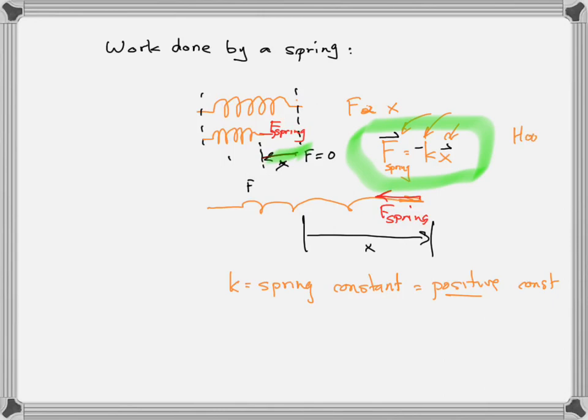Hooke's law, as in Robert Hooke — the person who fought with Newton. Newton was said to have remarked, 'If I've seen farther, it's because I've stood on the shoulders of giants,' because Hooke was a small man. And Newton was talking about Galileo. Anyway, that's Hooke's law.